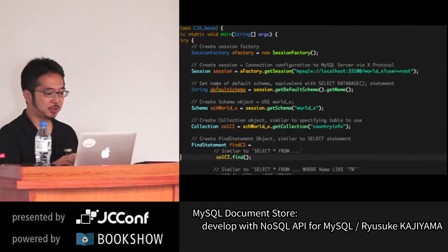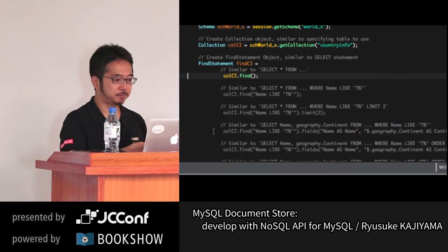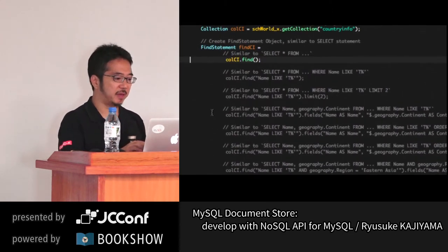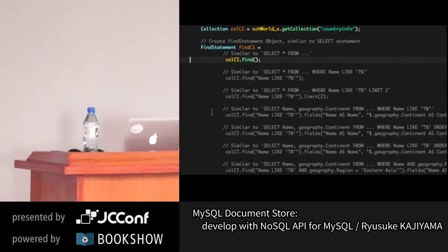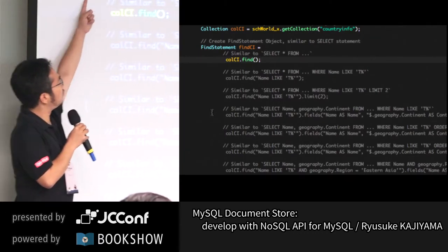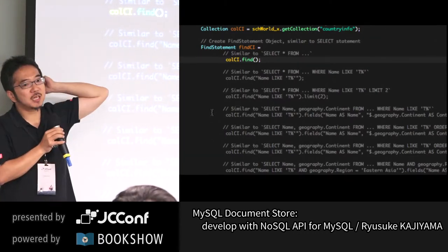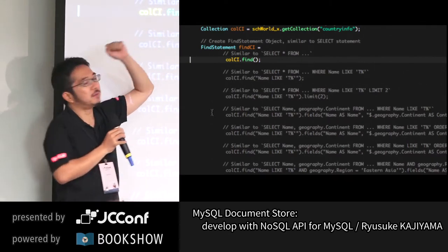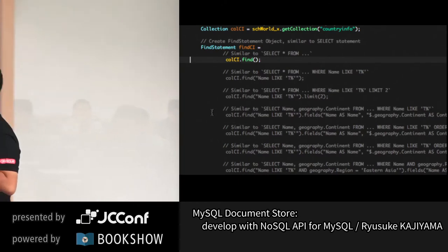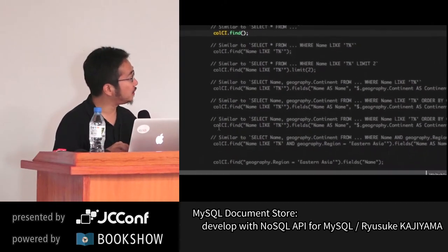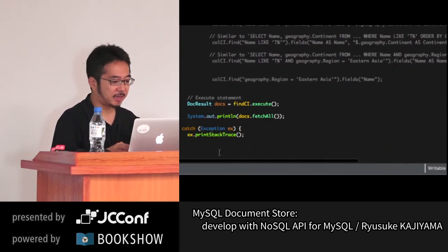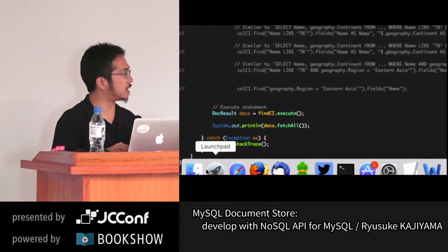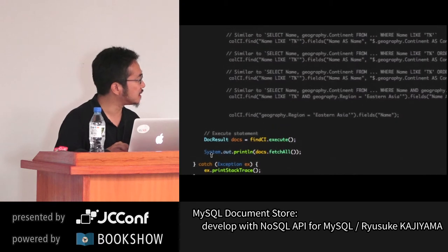The main portion of the program uses the find() method, which contains conditions just like a SQL WHERE clause but as method chains. The first one is just 'find()' with no other conditions. At the end, it prints the results — but not using a ResultSet; it uses a DocResult object instead. So we're using DocResult rather than ResultSet to handle JSON document results.